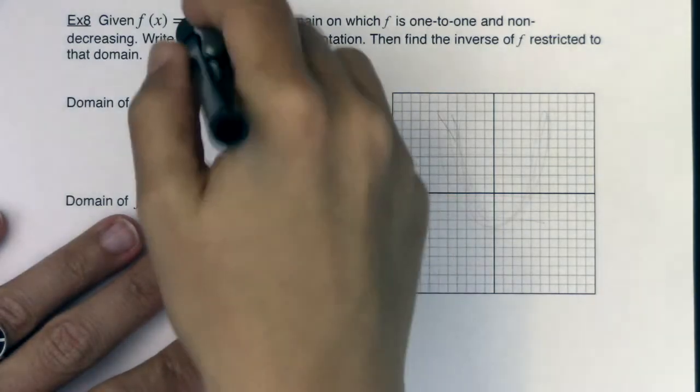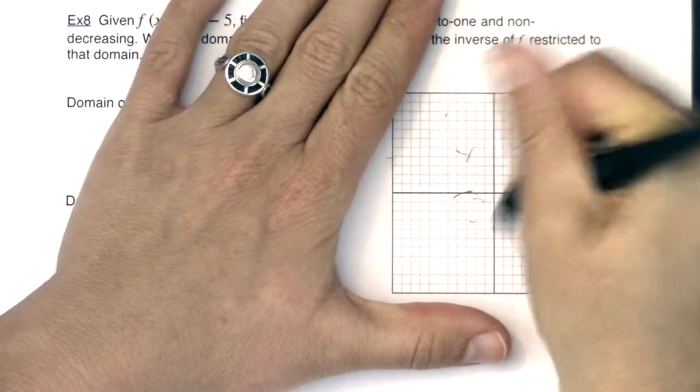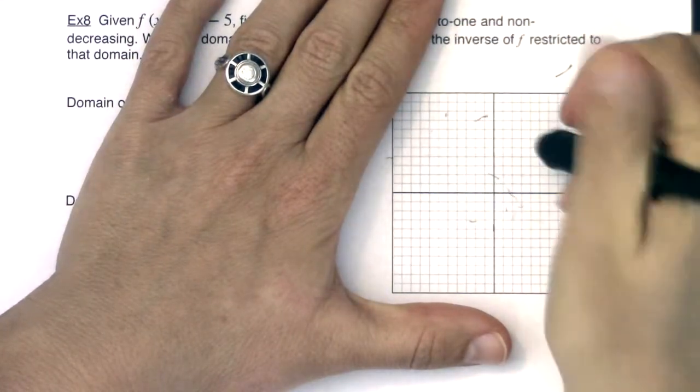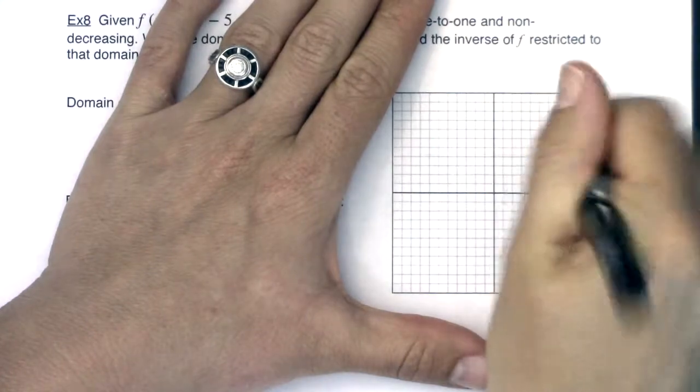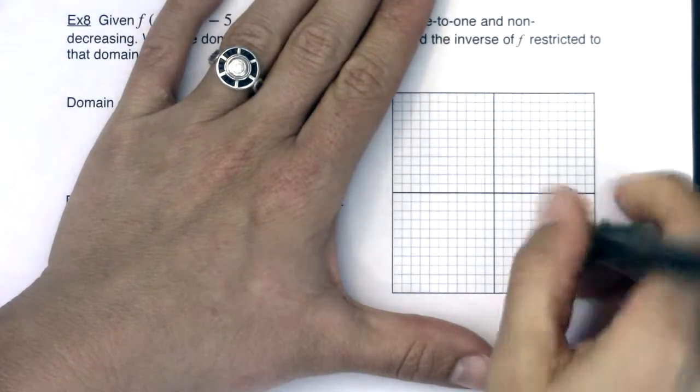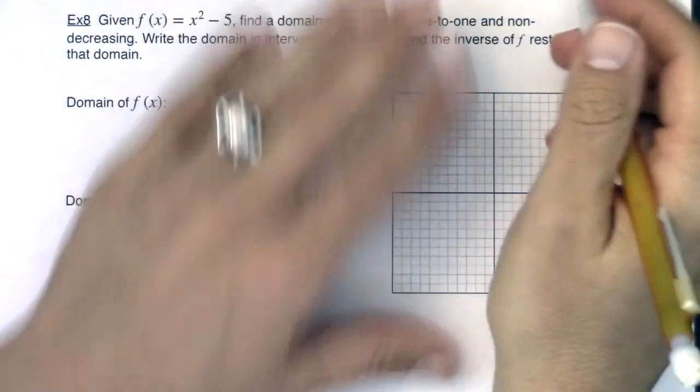So parabolas, this parabola as is, is not one-to-one, which is why this direction says find a domain on which f is one-to-one and non-decreasing. For the sake of continuing this, I'm actually going to write this function up a little bit more formally. Give me a moment. I'm going to plug in some numbers and get some ordered pairs or you could turn it right over to your calculator.